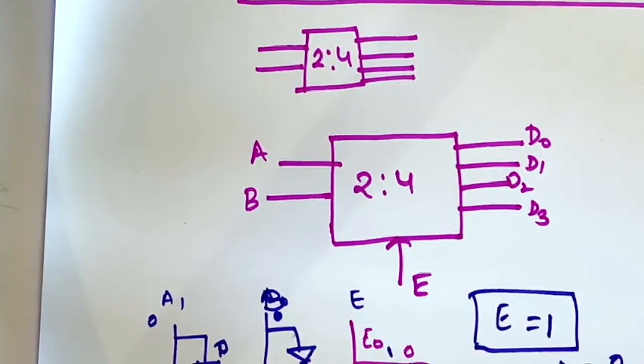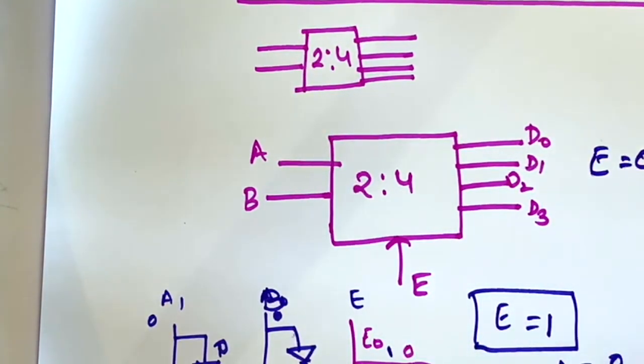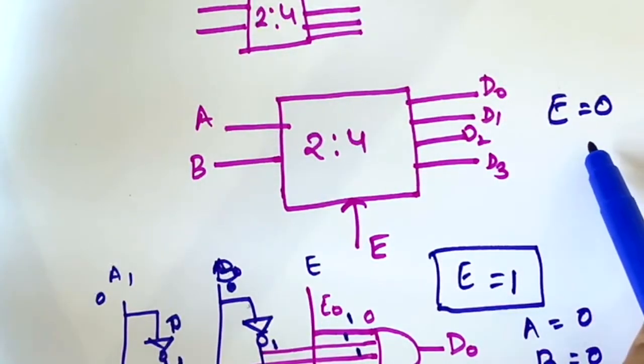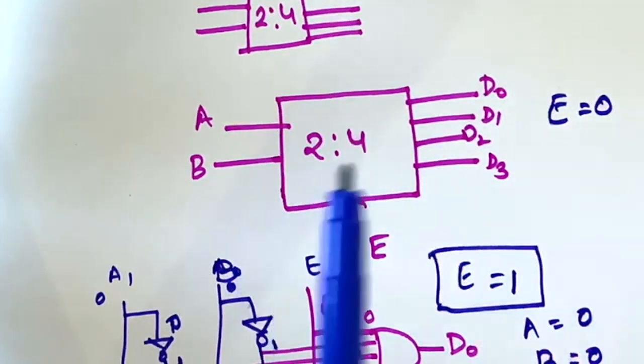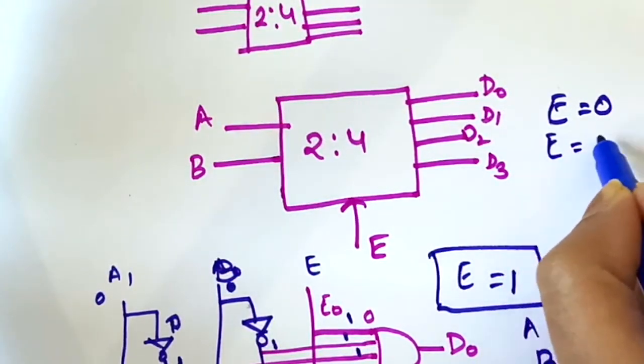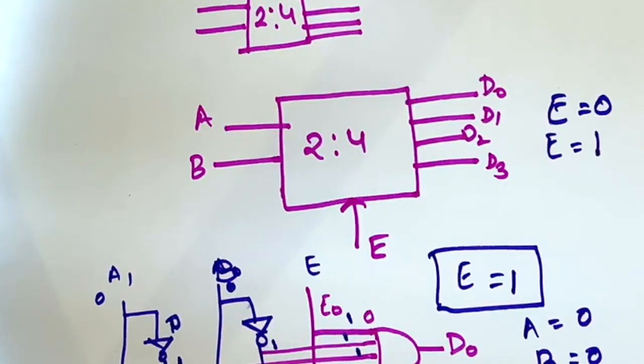Similarly we can check all other input and output values. So what we conclude is that when E equal to 0, the enable line is 0, the whole circuit is disabled and not working. But when the value of E equal to 1, then it will be enabled and the circuit will work. So this was the 2-to-4 decoder with enable.